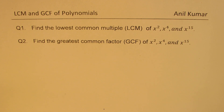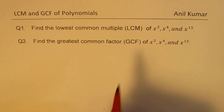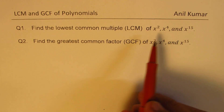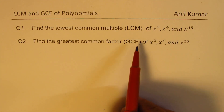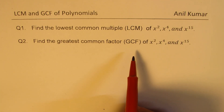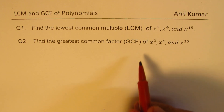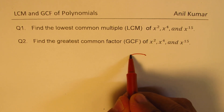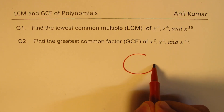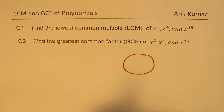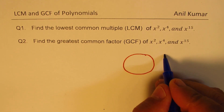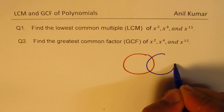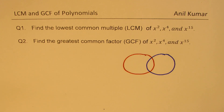You can always pause the video, answer this question, and then look into my suggestions. Now I am going to use Venn diagrams to show you how we find the LCM and GCF. So let me make three circles for the factors of x squared, x to the power of 4, and x to the power of 15.